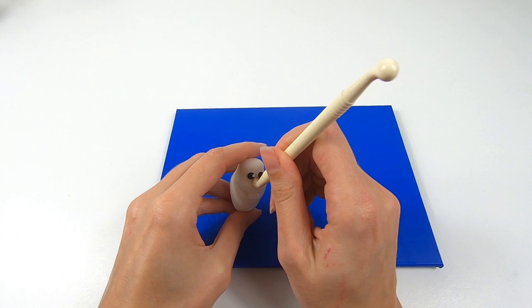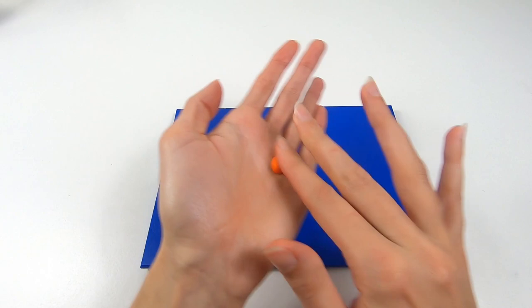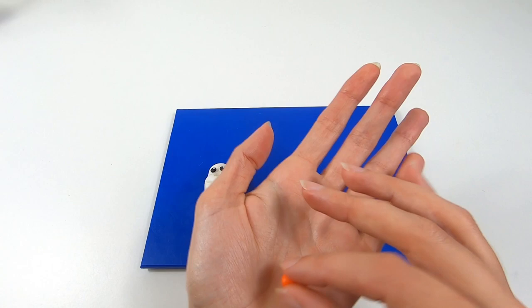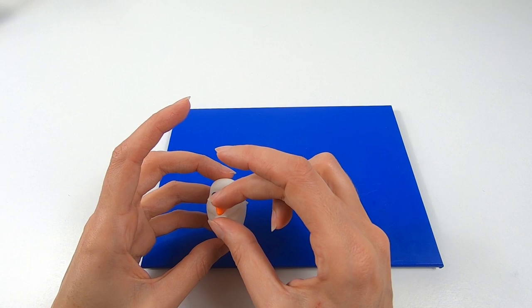I'm then using a bone tool to create a hole for Olaf's carrot nose but you can quite easily use the ball tool here as you did for the eyes. Apply some water's glue and roll out some orange modelling paste into a ball and using your finger mould this into a carrot shape. And pop this into the hole.